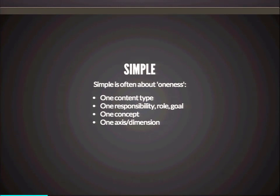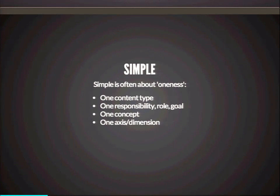Simple. I said already — simple, simplex, one fold or braid. And this oneness idea is really important. Here are some examples of the sort of oneness I'm talking about: dealing with one content type, something having a single responsibility or role or goal, there's just one concept in play or there's just one axis or dimension. The key thing patterned across all of these is that there's a lack of interleaving. We don't have multiple different roles or responsibilities interleaved together. When you have something that has two jobs, it's sort of split-brained — they're interleaved together.